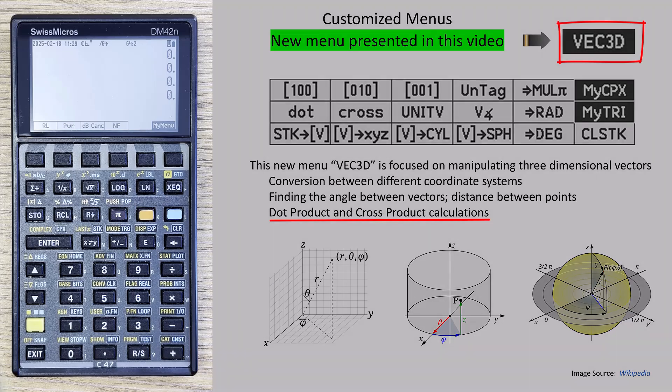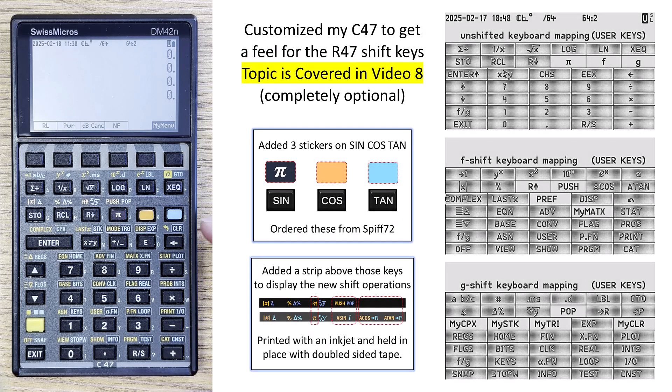Just a reminder, I have customized my C47. In fact, it's running now on a DM42N, and I've added some stickers on the trig keys. These are optional changes. You do not need to make these changes in order to take advantage of the things I'm going to show in this video.